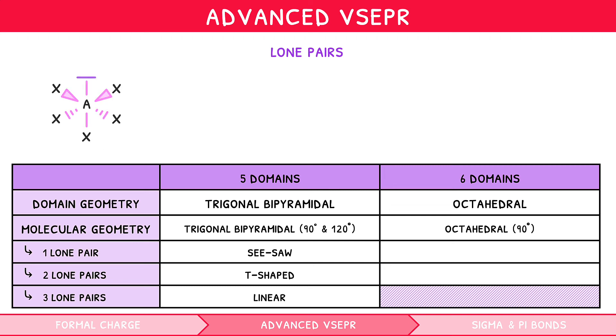If the electron geometry is octahedral with one lone pair, the resulting shape is known as square pyramid, for example, BRF5. If the electron geometry is octahedral with two lone pairs, the resulting shape is known as square planar, for example, XEF4.